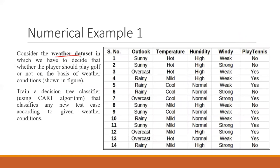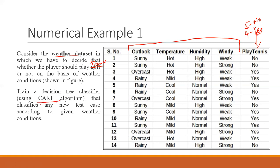Consider the weather dataset again — play tennis or not. There are five 'No' values and nine 'Yes' values. The independent variables are outlook, temperature, humidity, and wind. Outlook has three types: sunny, overcast, rainy; temperature is hot, mild, cool; humidity is high or normal; wind is weak or strong.